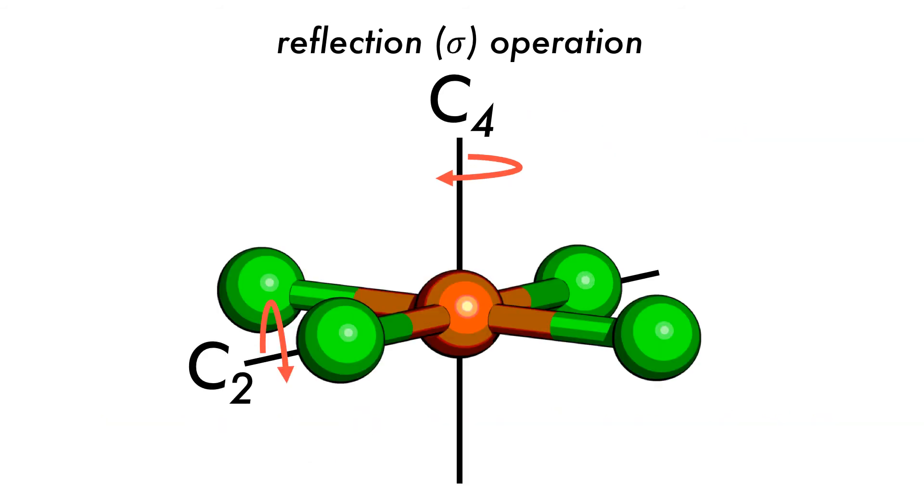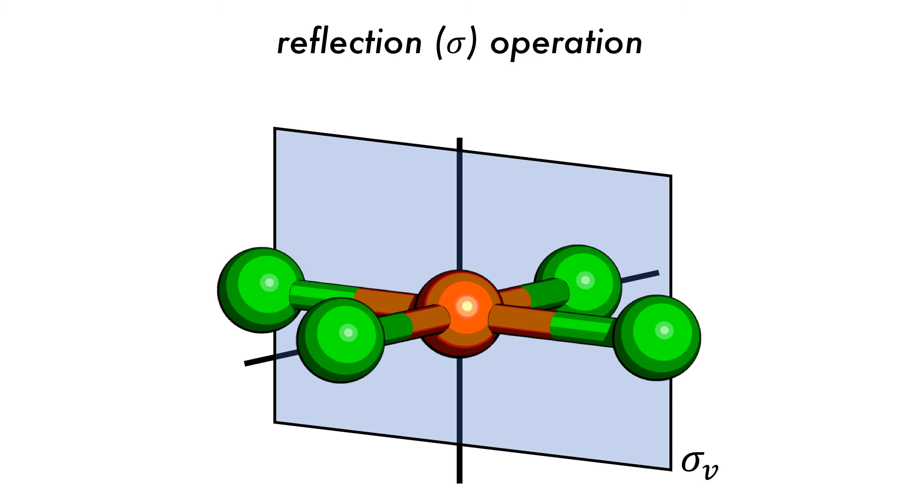When we do a reflection operation, the molecule has a mirror plane. These often coincide with rotational axes. The major mirror plane is coincident with the principal axis of rotation and is designated with a sigma v. Any other mirror planes are denoted with sigma subscript h.